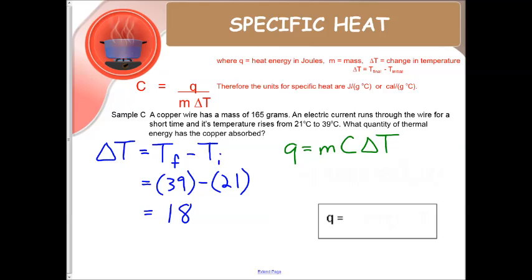So let's go and plug it into our formula, Q equals MC delta T, M was 165, our specific heat for copper, if we look on that chart, is .385, and like we said, our delta T is 18. So when we do the math here, we're going to get 1,140 joules. Again that's rounded for sig figs.